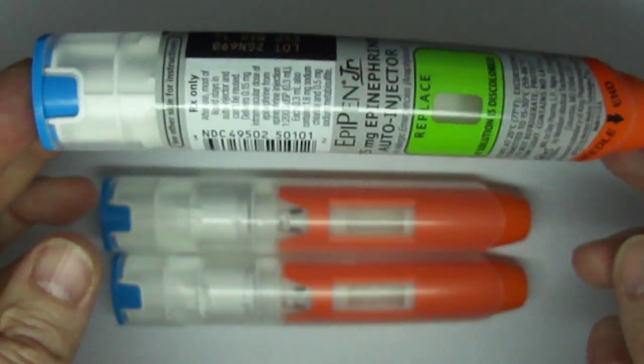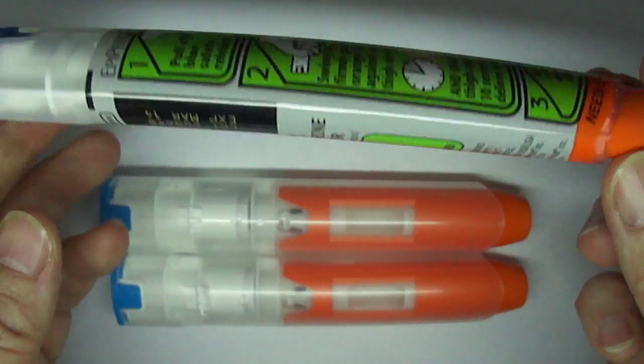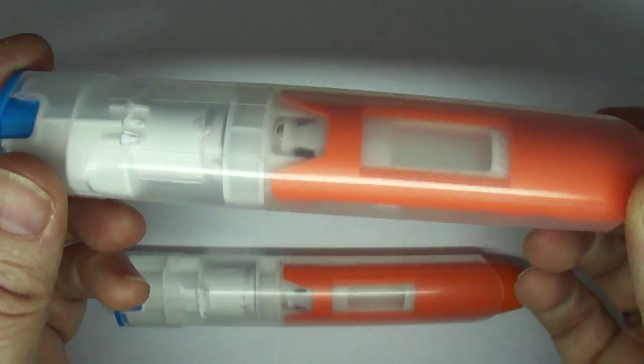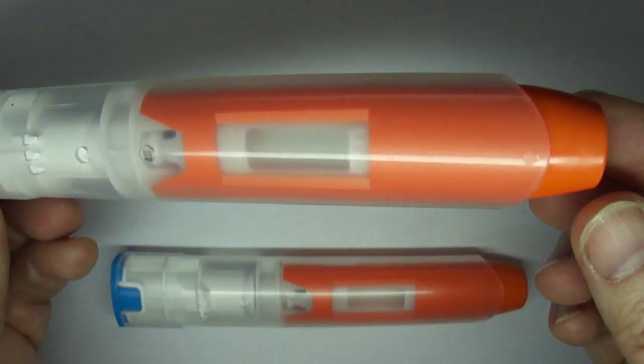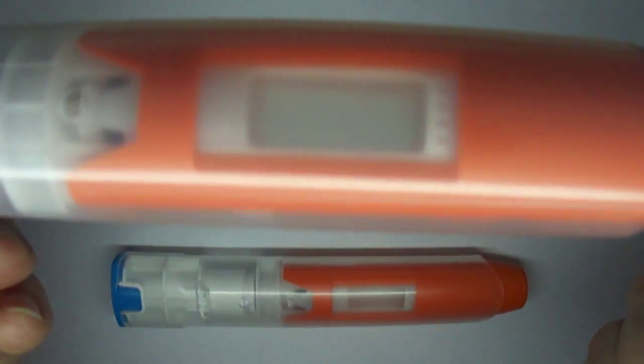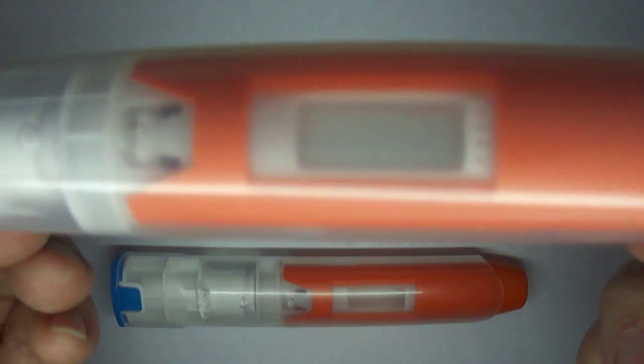So this is a normal EpiPen Jr. This device has had the plastic label removed. It is otherwise a normal, unfired EpiPen Jr. And you can see now a larger clear plastic window and again it has a slightly cloudy but not discolored appearance.